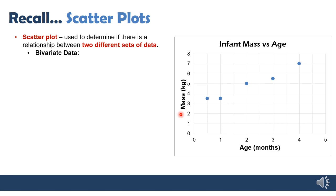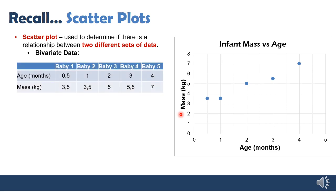You're going to learn more about bivariate data in grade 12; we're just doing a little bit of a primer now. Here's the bivariate data for this table: the first baby has an age and a mass, the second baby and the third baby, etc. Each of these points on our scatter plot represents one of these babies. Each measurement has two different data values associated with it.